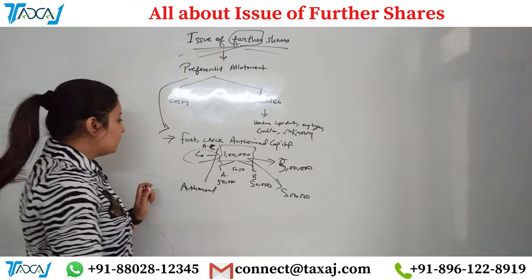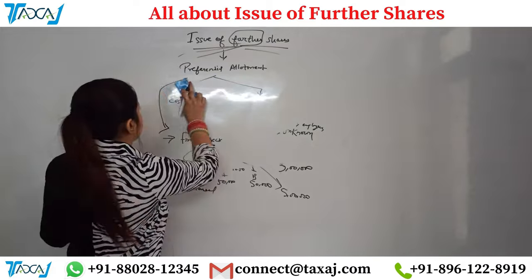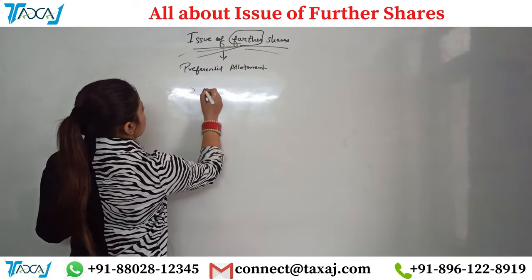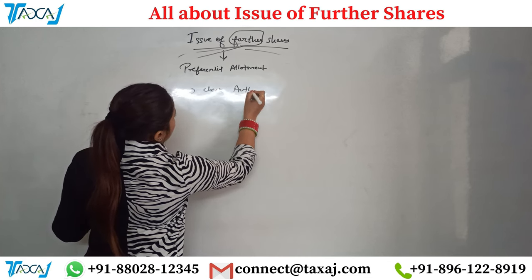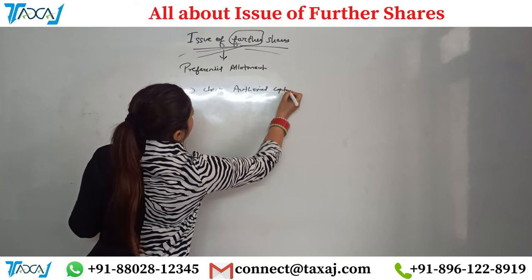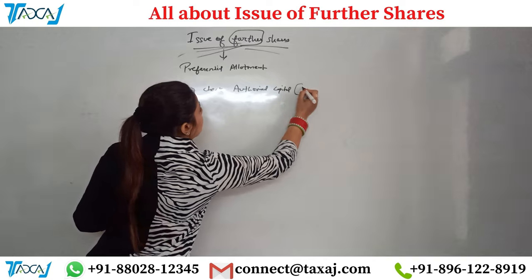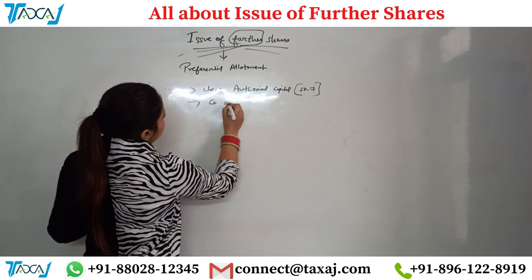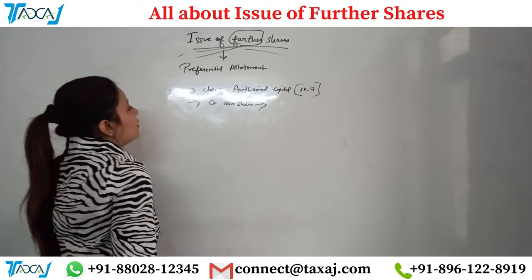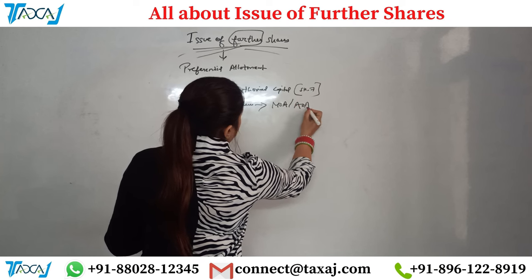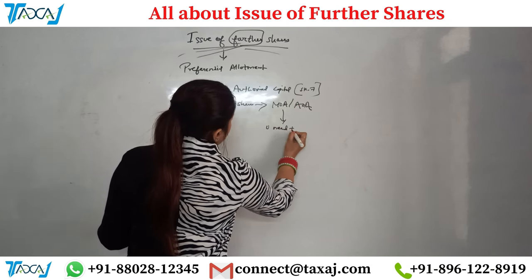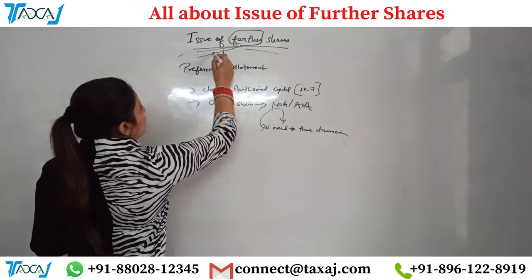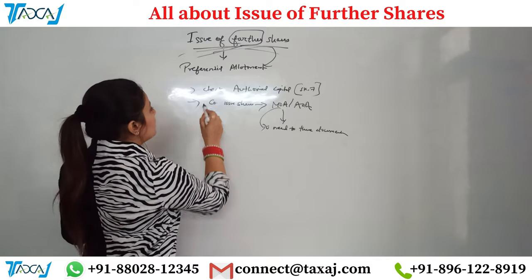First, they need to increase the authorized capital. You can watch the video on increasing authorized share capital on our channel. After confirming authorized capital is sufficient — say more than 5 lakh — you also need to check whether the company's MOA and AOA contain the clause for issuing shares. If not, you need to change these documents and add 'issue of further shares through preferential allotment' in the AOA.